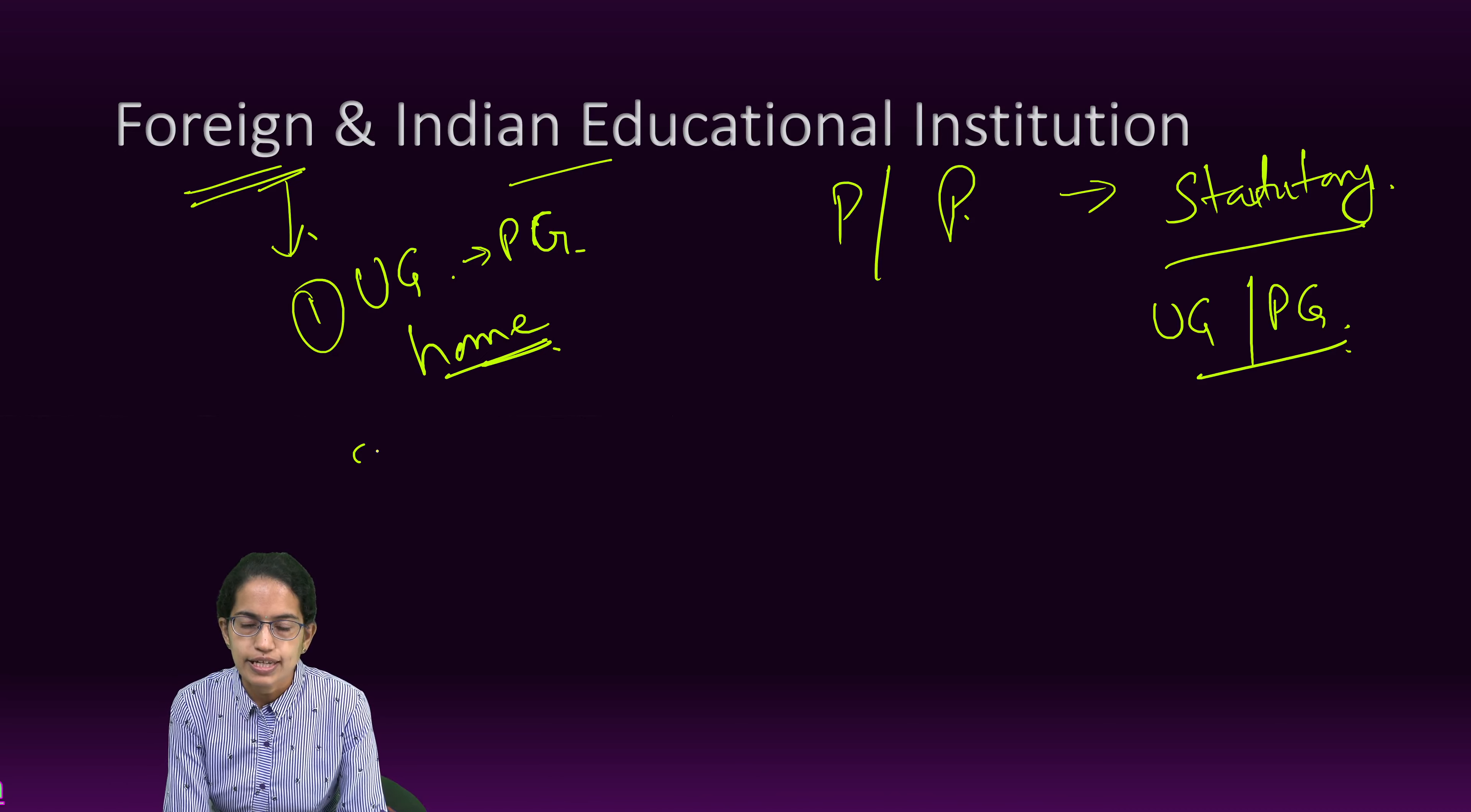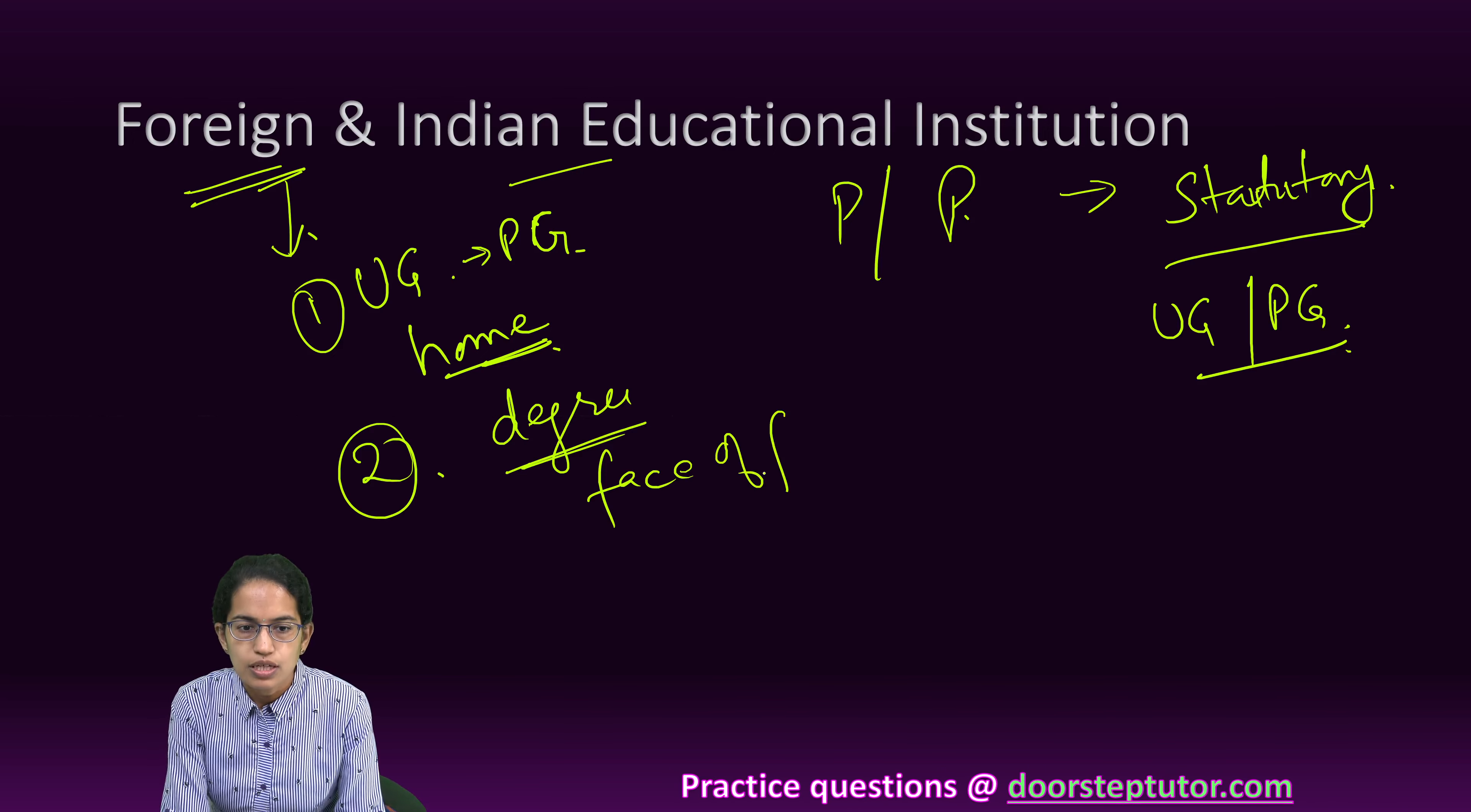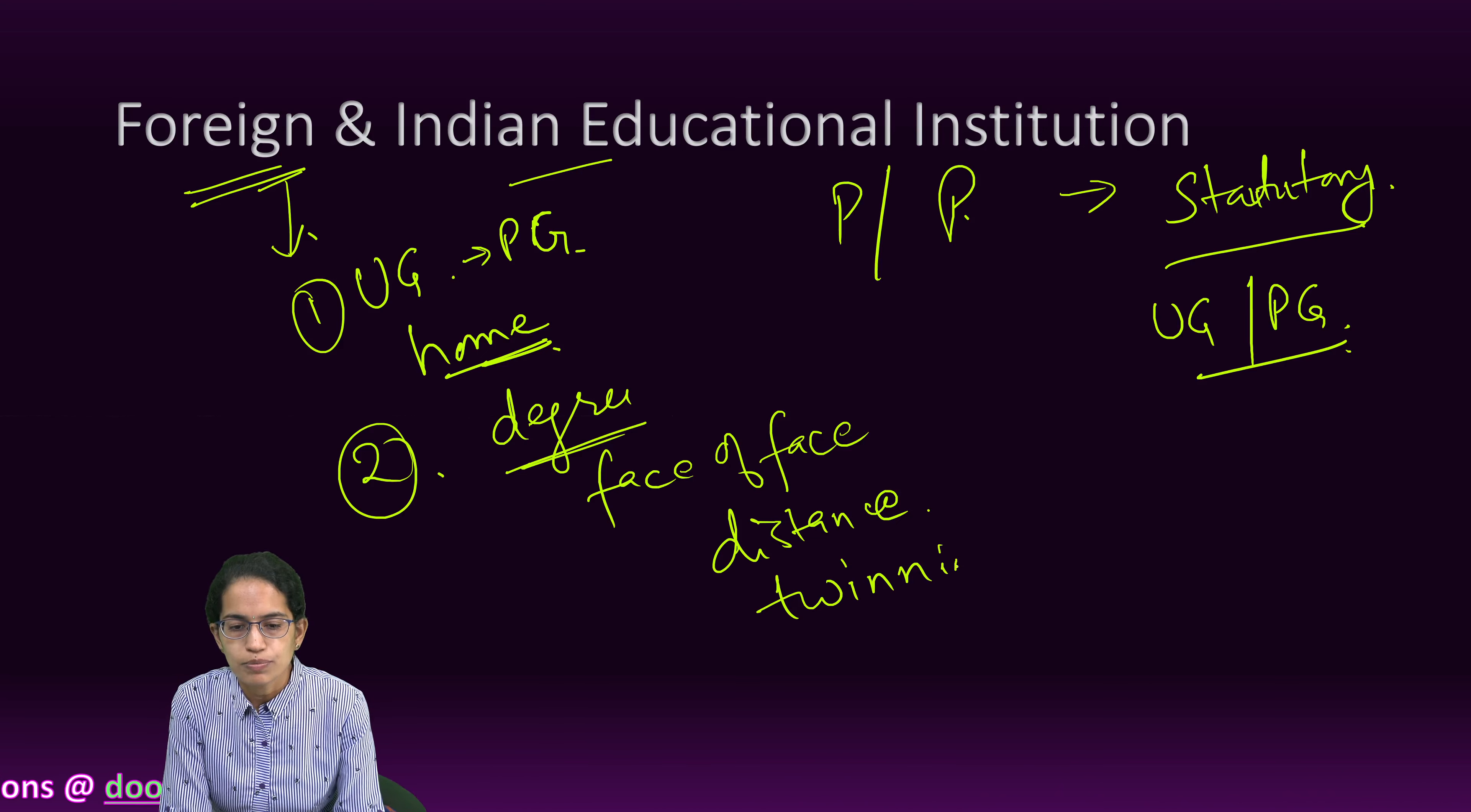So, that is one criteria. The second criteria is it offers the program for the purpose of degree and has face-to-face mode of education. It can include a distance mode of learning and can also have an arrangement of twinning program.